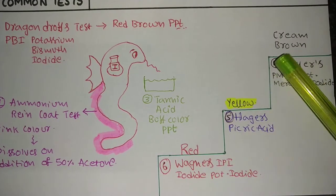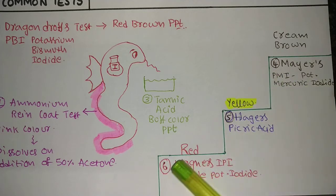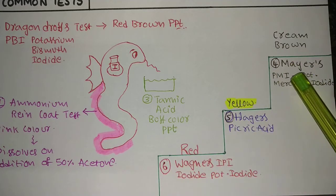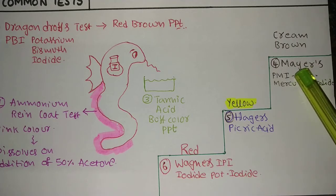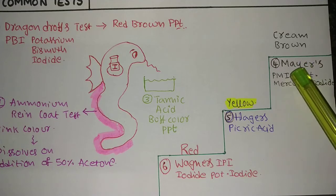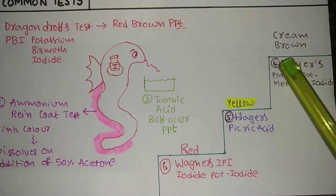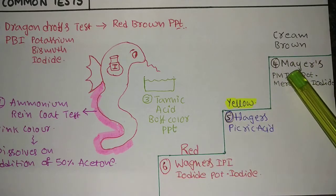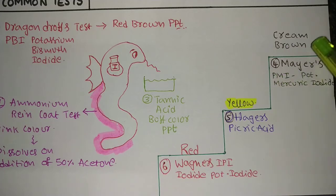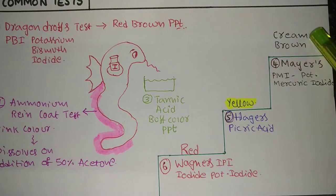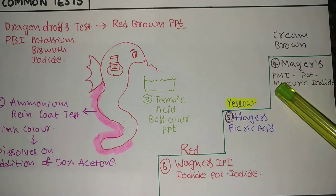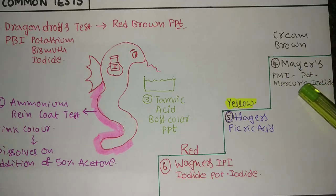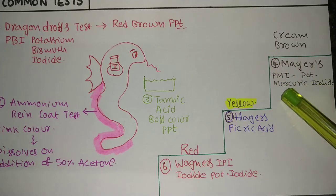The fourth test is Mayer's test. Think of the mayor of a city like Chennai or Hyderabad. I have given three steps — bottom, middle, and top. Mayer's test is at the top step because it gives a cream color precipitate, and cream people are at the top. The reagent is PMI — Potassium Mercury Iodide — just like PMI stands for Prime Minister of India, who is at the top.